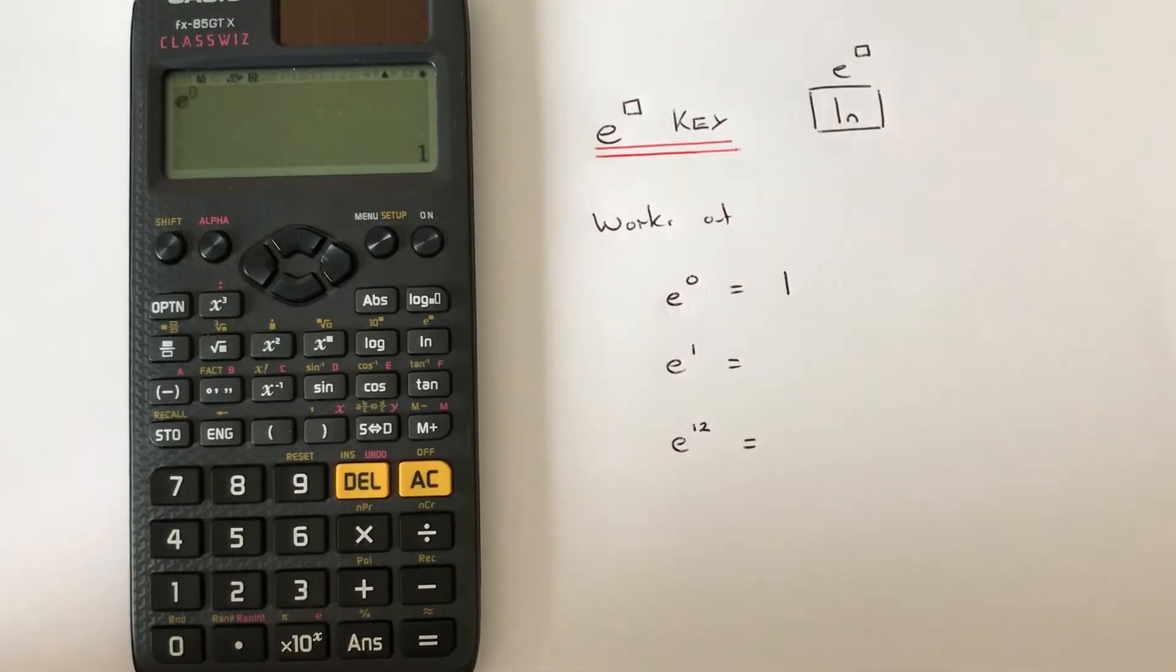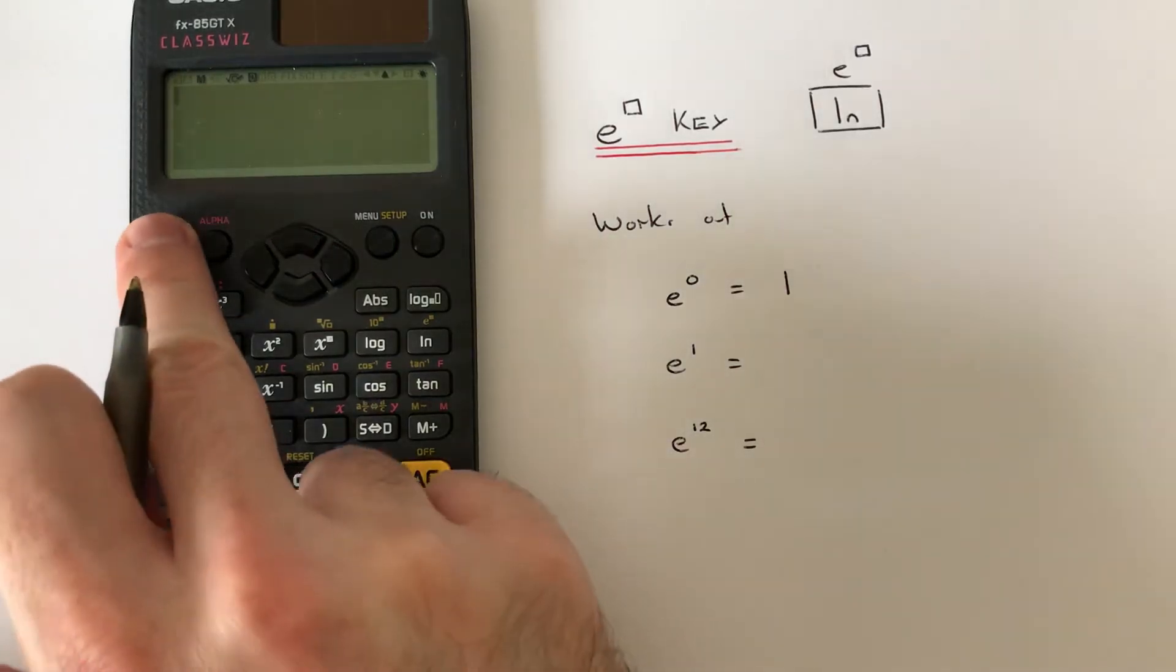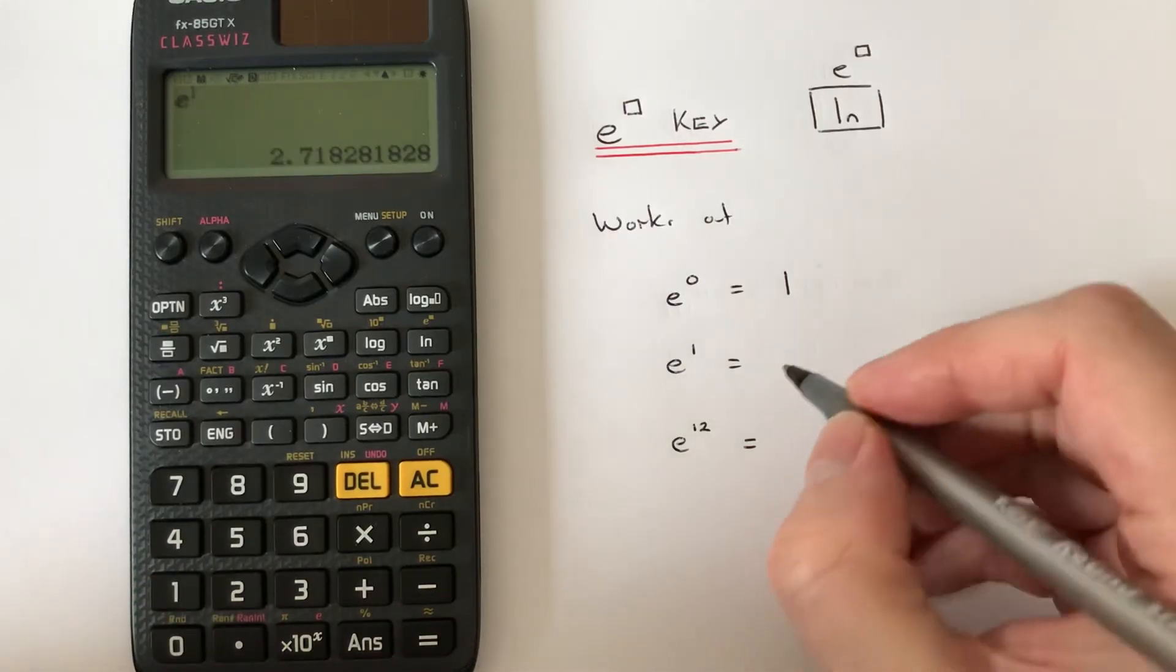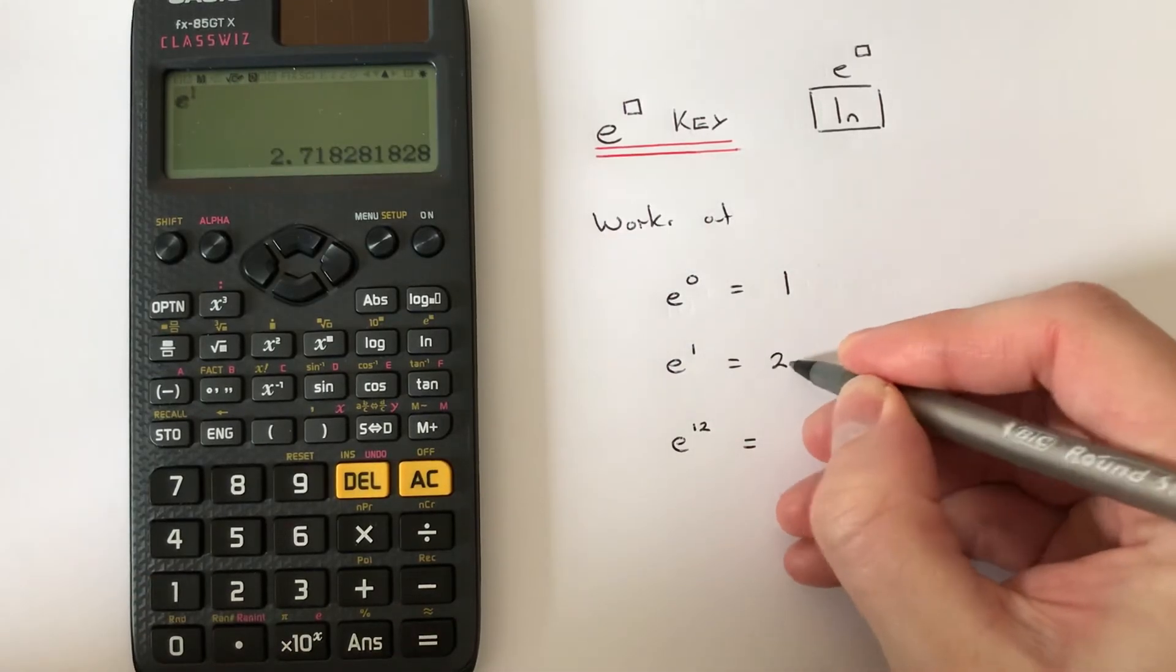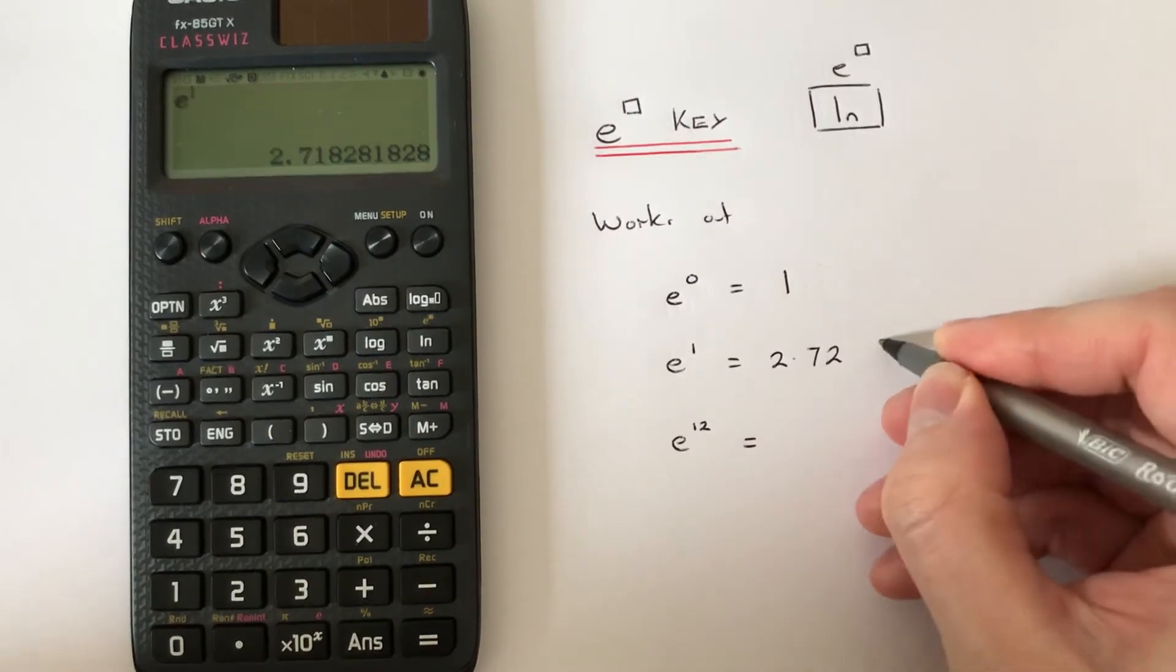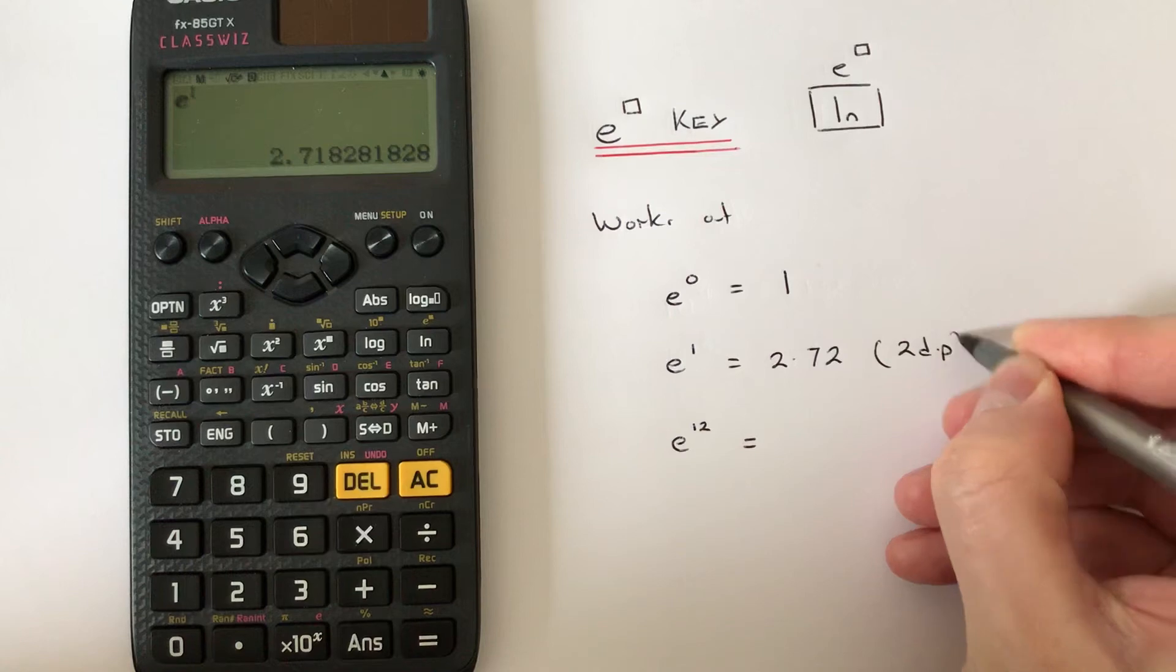Let's do e to the power of 1. So press shift natural log 1, press the equals, and let's round this one off to two decimal places. So we get 2.72.